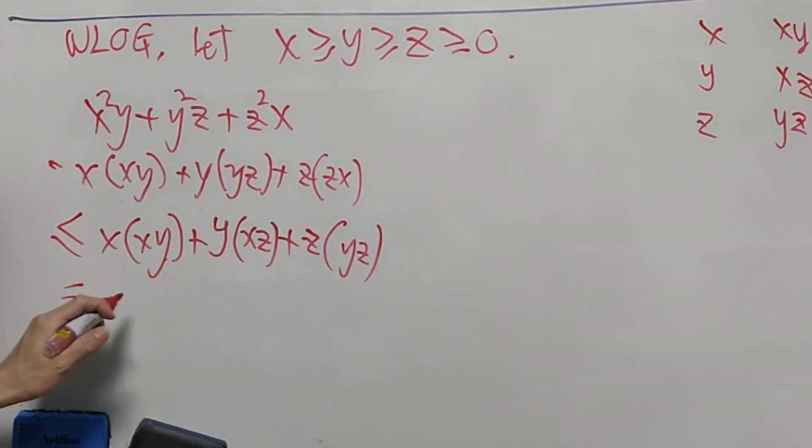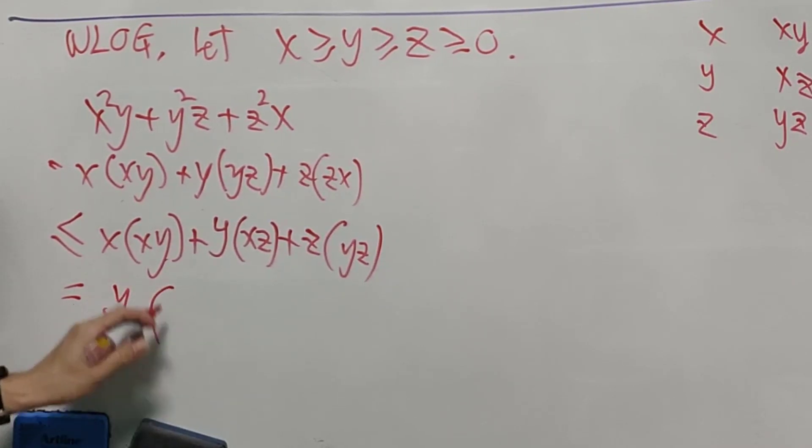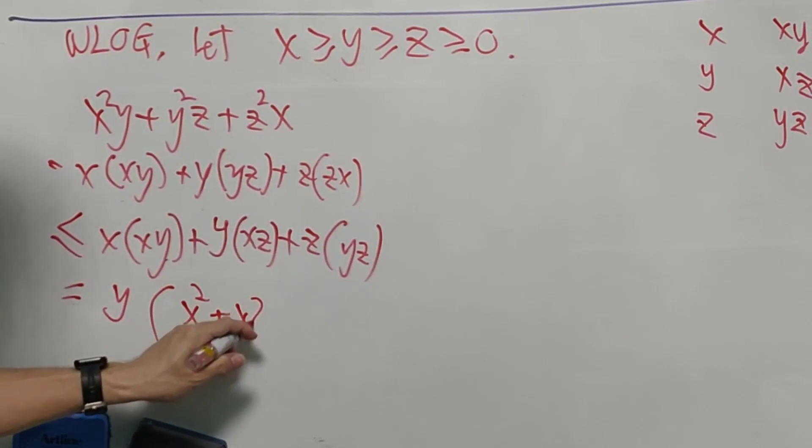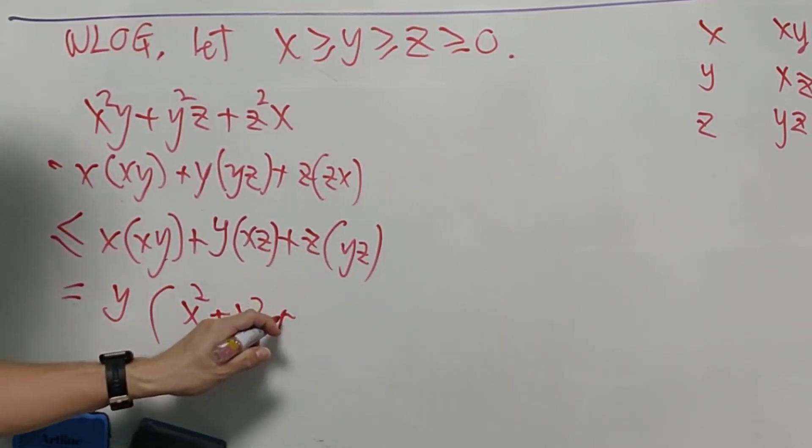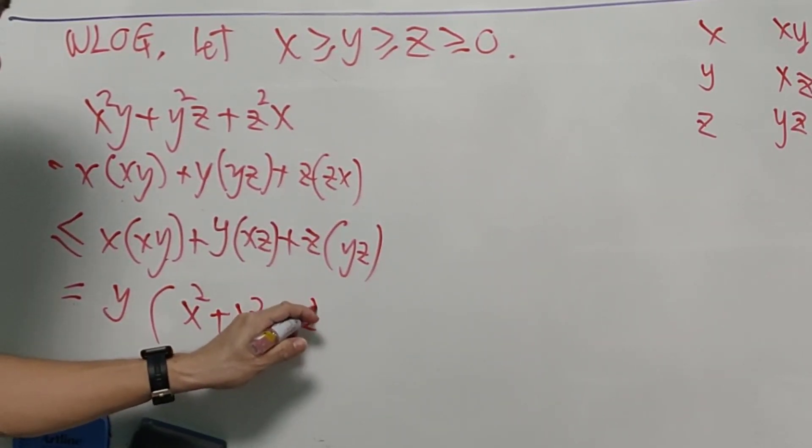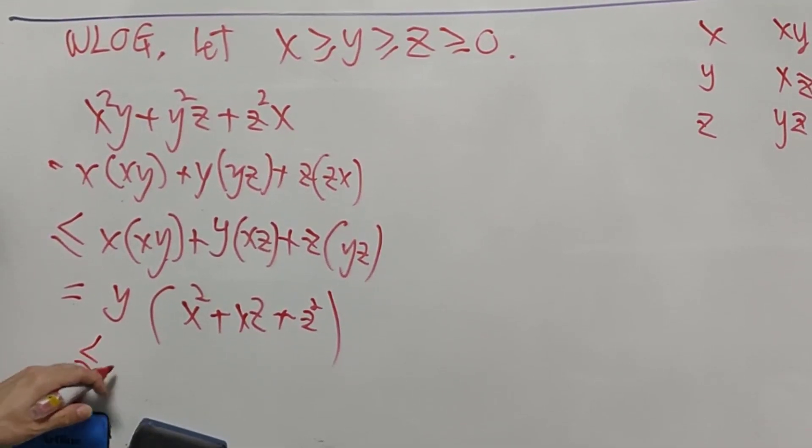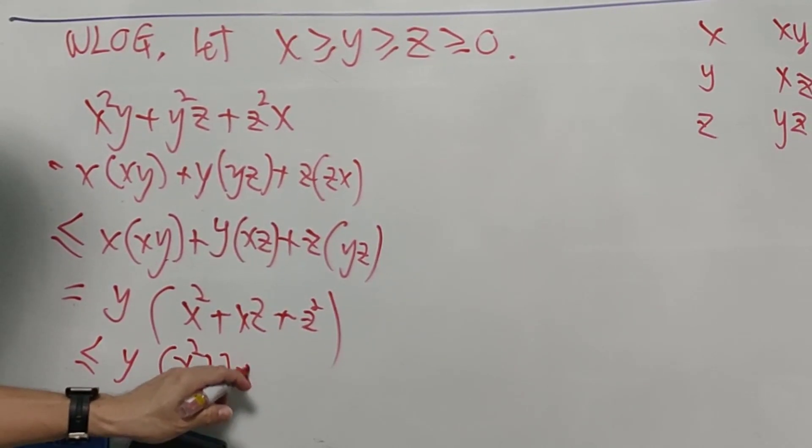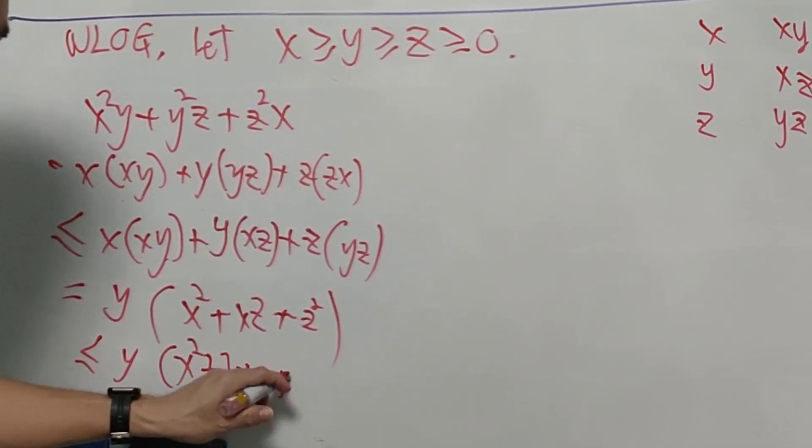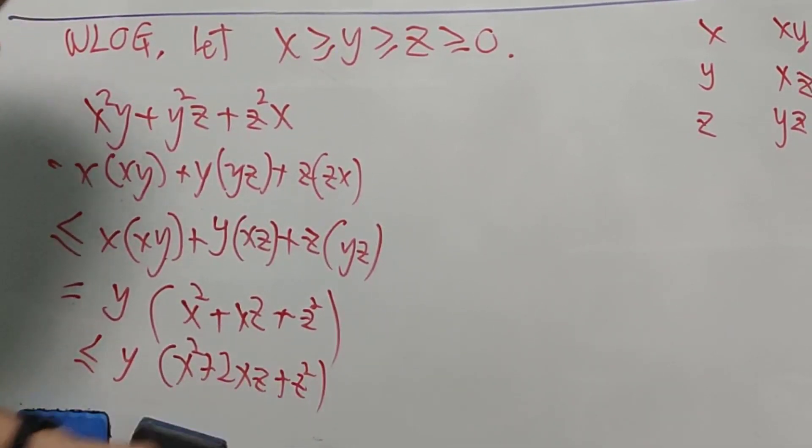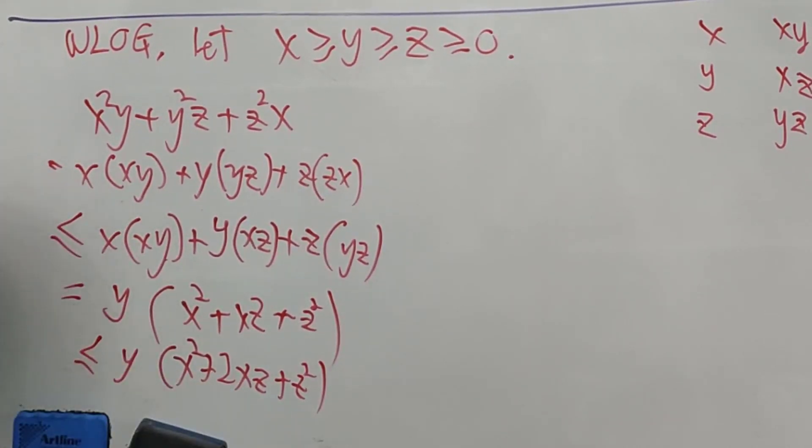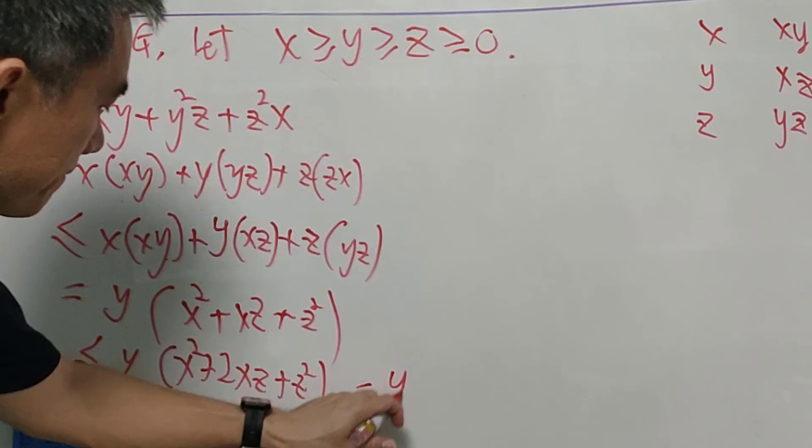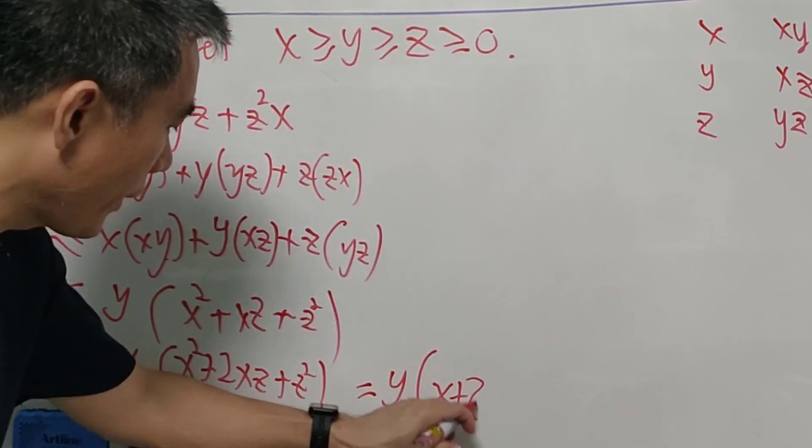We can factorize the Y, and we have X squared, plus XZ, plus Z squared. Of course, this will be less than equals to Y, X squared, plus double of XZ, plus Z squared. I add another XZ, and this will be equal to Y, X plus Z squared.